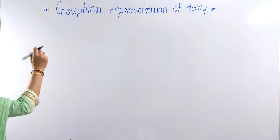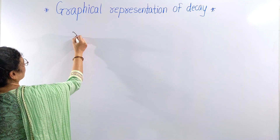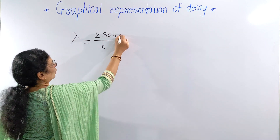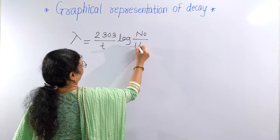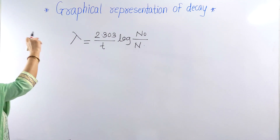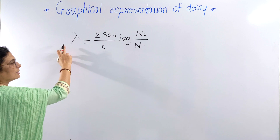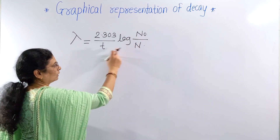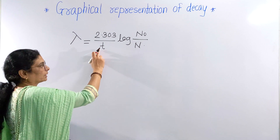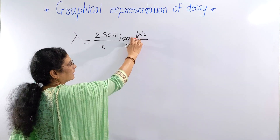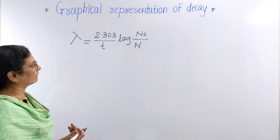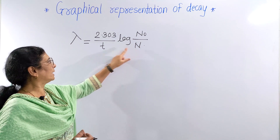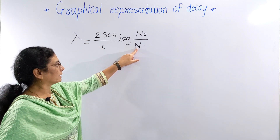You know that the expression for decay constant, lambda, is equal to 2.303 upon t, multiplied by log of N₀ upon N. We have derived this expression: lambda, the decay constant (also called the integration constant), equals 2.303 upon t, times log of N₀ upon N. Here, t is the time required to decay the quantity from N₀ to N. N₀ is the initial quantity of radioactive element, or the number of radioactive atoms present initially, and N is the number of radioactive atoms remaining at time t.